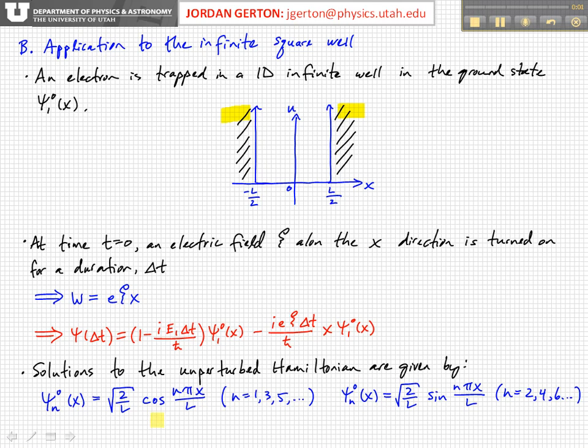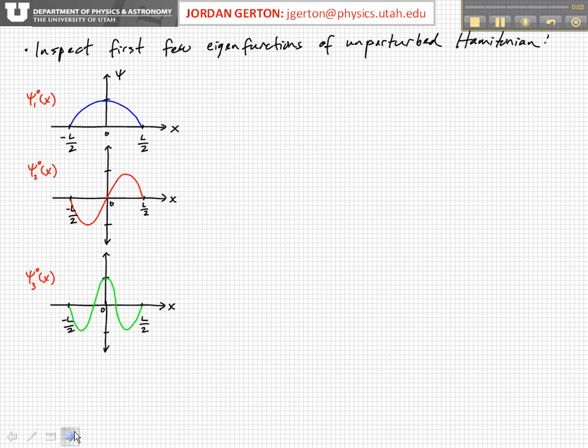Okay, so let's look at the first few eigenfunctions of the unperturbed Hamiltonian. We've seen them before, we know what they are, we've just shifted them by L over 2. So we know that the ground state here has now a cosine solution, but basically it has one antinode. This is the wave function, not the probability density, so it's got one antinode. It's basically a half a wavelength fits into the well.